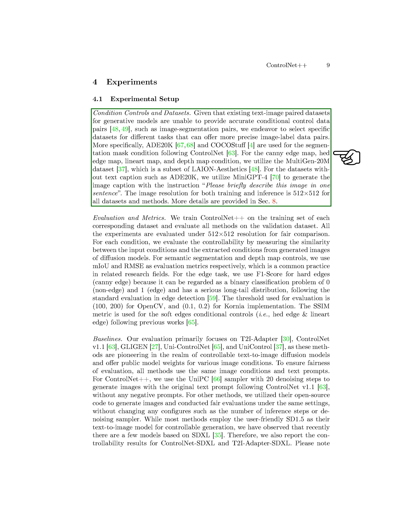For condition controls and datasets, we select specific datasets like ADE-20K, CocoStuff, and Multigen-20M to provide accurate conditional control data pairs for different tasks. These datasets help improve the precision of image-label data pairs, enhancing the performance of our method. Additionally, we use MINI-GPT-4 to generate image captions for datasets without text captions. The image resolution for training and inference is set at 512 by 512 for all datasets and methods.